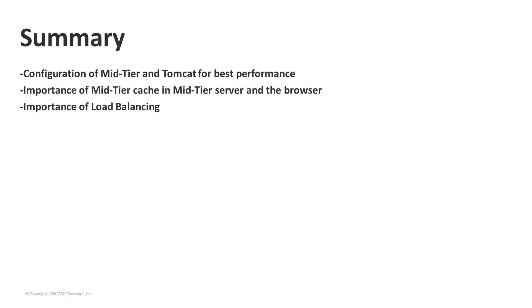That brings us towards the end of my part. In summary, we covered configuration items for Mid-Tier and Tomcat to help give you the best performance. We talked about Mid-Tier cache — how to build it and how to update it in both the Mid-Tier server and the browser. And we talked about load balancing. I'll now turn it over to Hugo, who will talk more about Mid-Tier's EH cache.